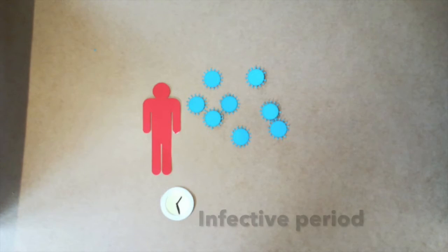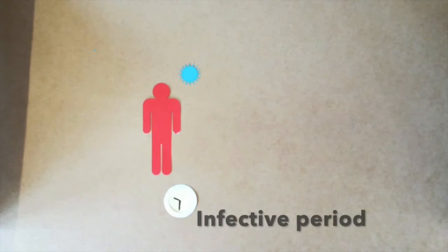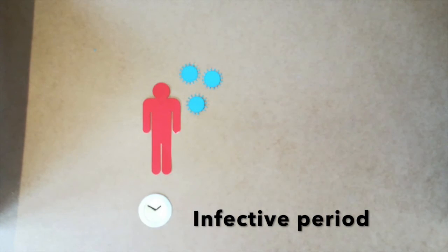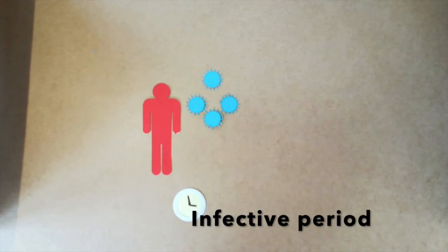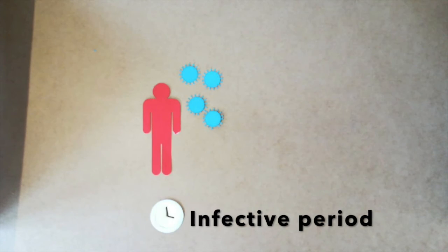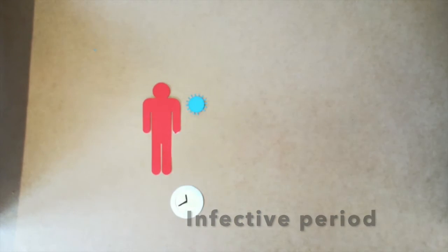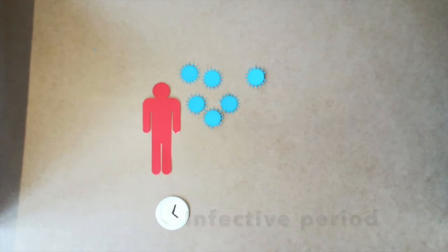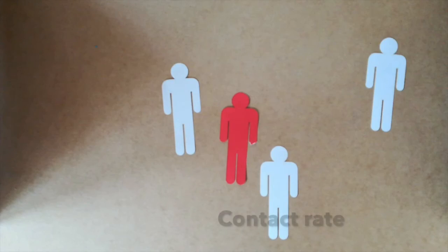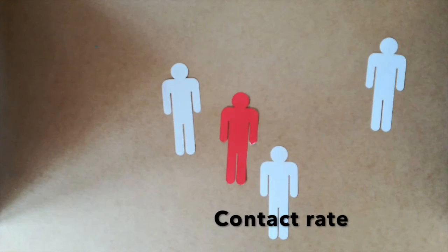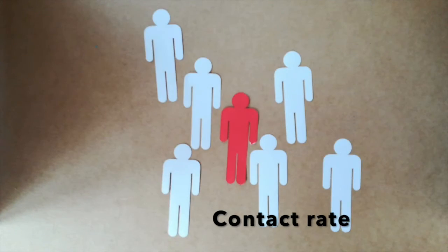The first factor is the infective period. This is for how long a sick person can transmit the disease to other people. The longer the infected period, the higher the contagious rate. The second factor is the contact rate. How many people do sick people meet, and how close together they get?